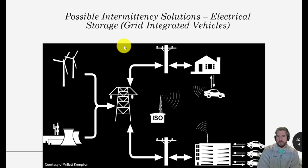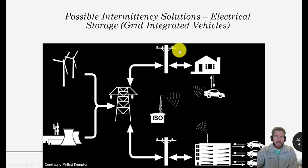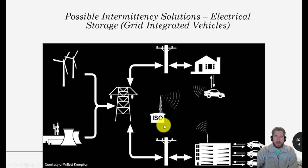In this diagram, the generators — whether nuclear, coal, wind, or others — feed into the transmission system, then into the distribution system, just like we saw earlier. The ISO, like PJM, is the gatekeeper that controls the whole system. In the traditional setup, the ISO mainly controls the generators. But with vehicle-to-grid, they now have one more aspect of control.